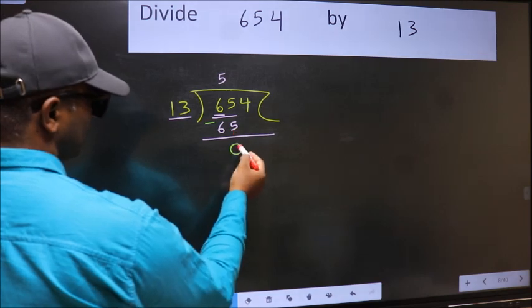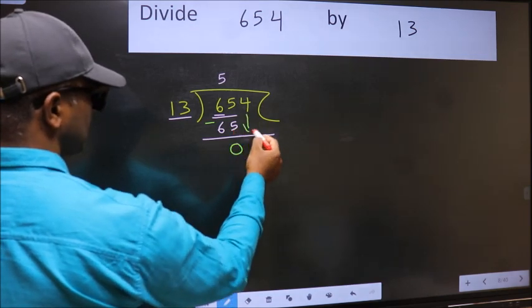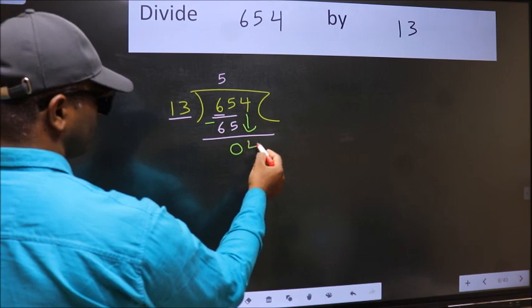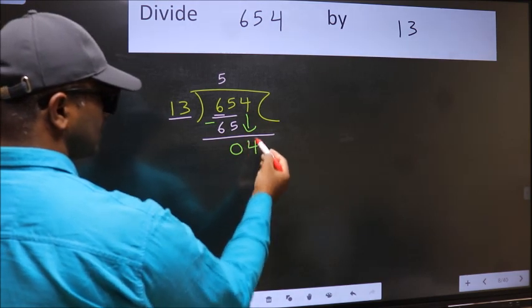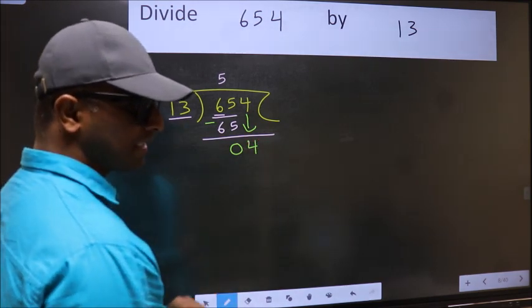After this, bring down the beside number, so 4 down. After this step, the mistake happens.